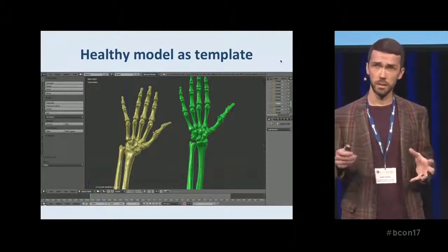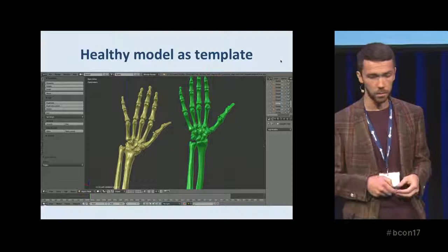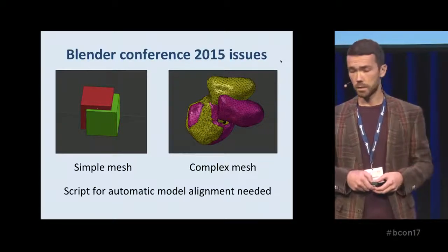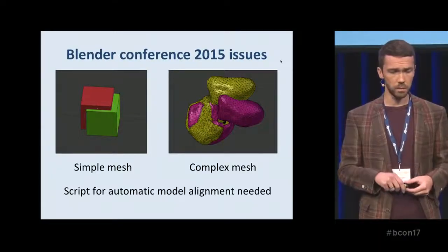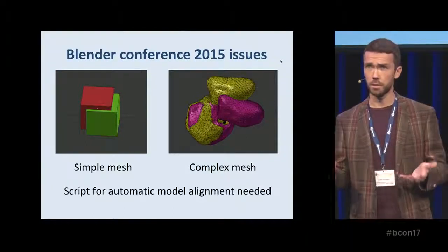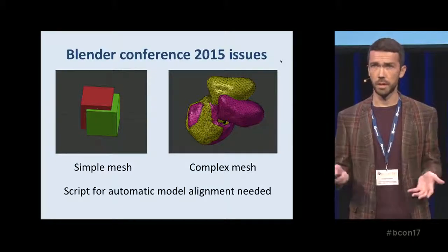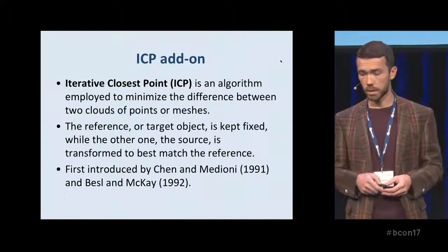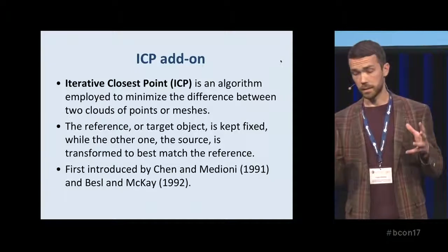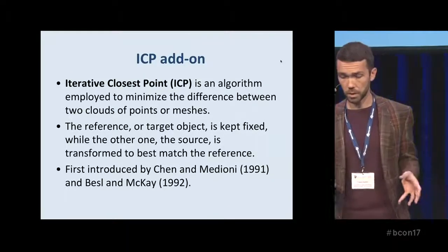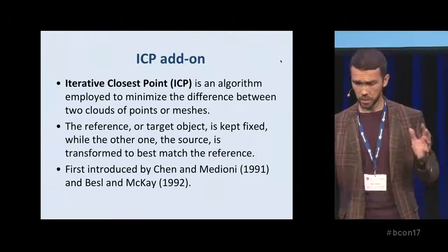On this slide, the green model is the healthy hand — mirrored to represent the right one — and the yellow one is the one with the problem. At the 2015 Blender conference I raised an issue about model alignment, because when we have these two models we have to align them against each other to understand where the deformity arises from. I got great feedback from the Blender community, and eventually I came across an add-on called the ICP add-on. This is an Iterative Closest Point alignment algorithm that minimizes the difference between two meshes: one object is held in place while the other is rotated and translated around it to best match the reference.